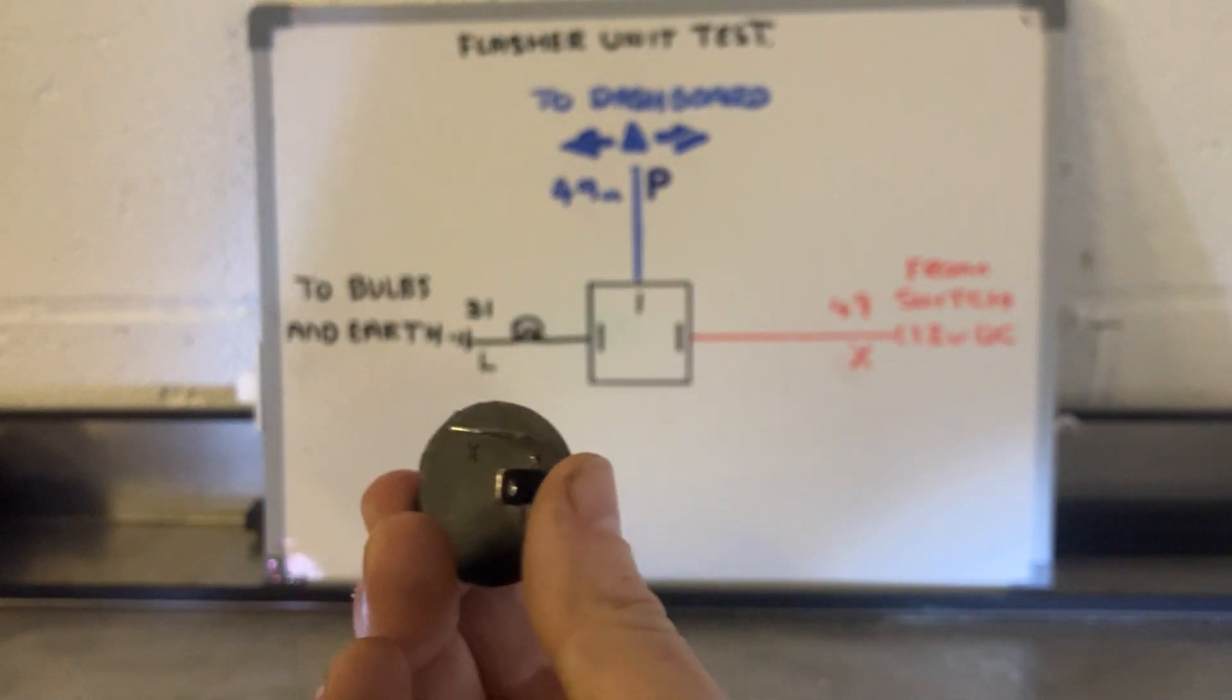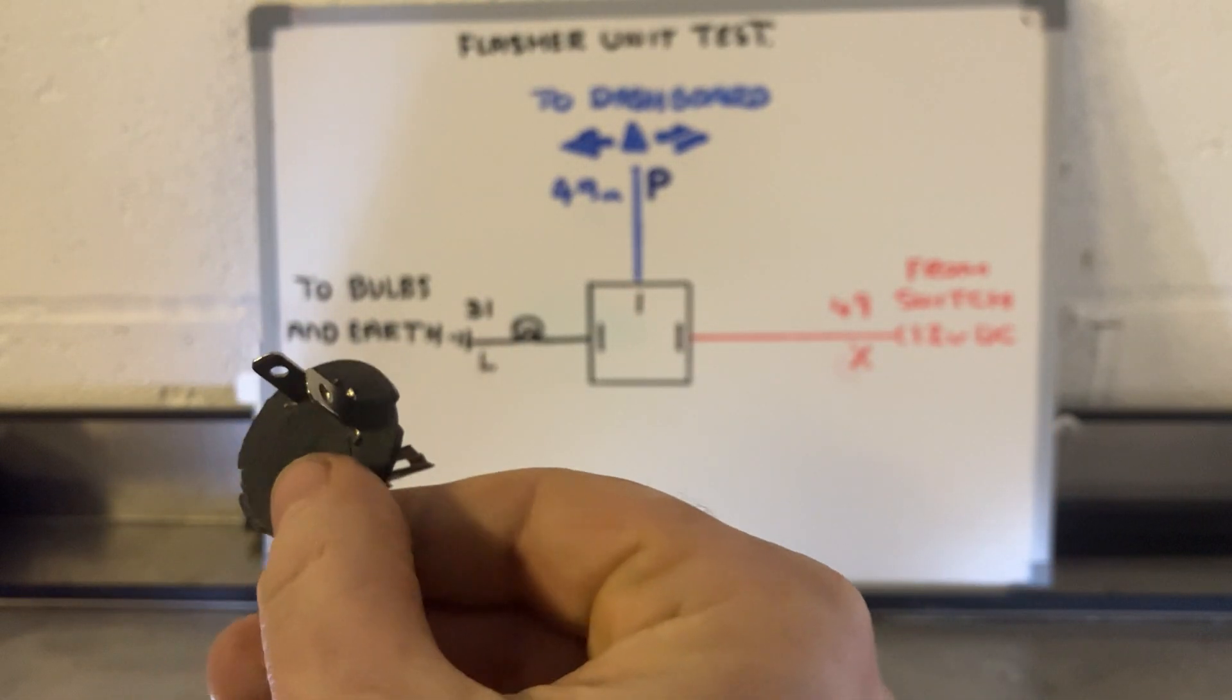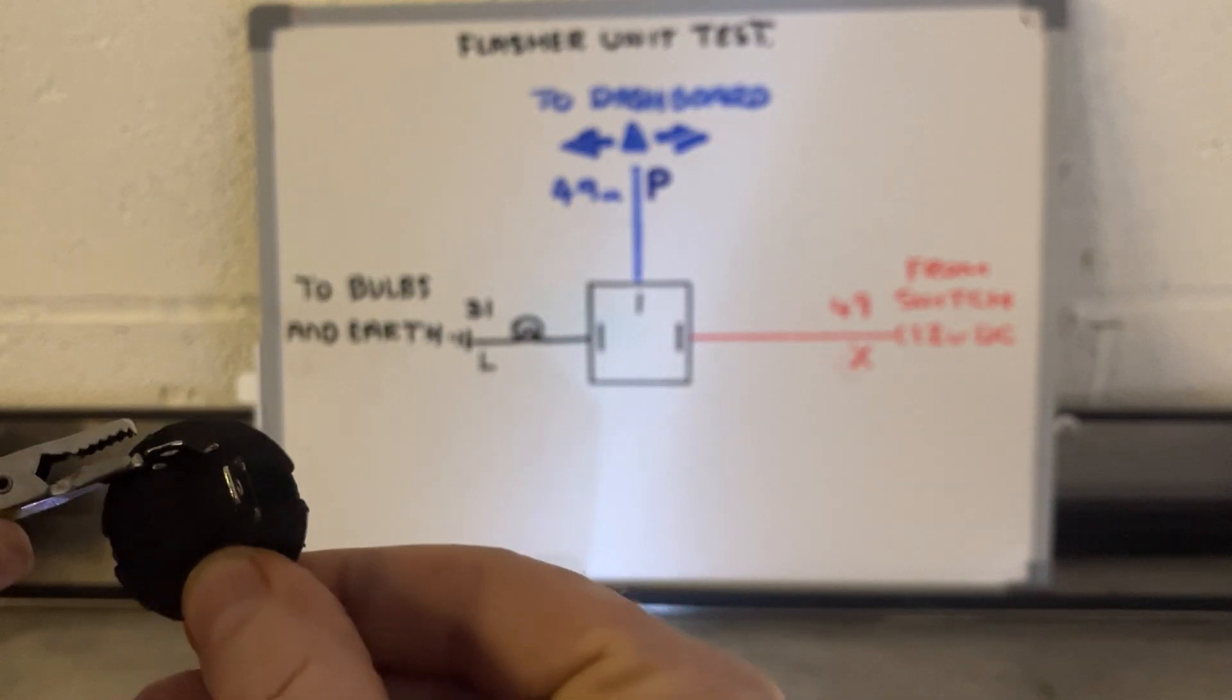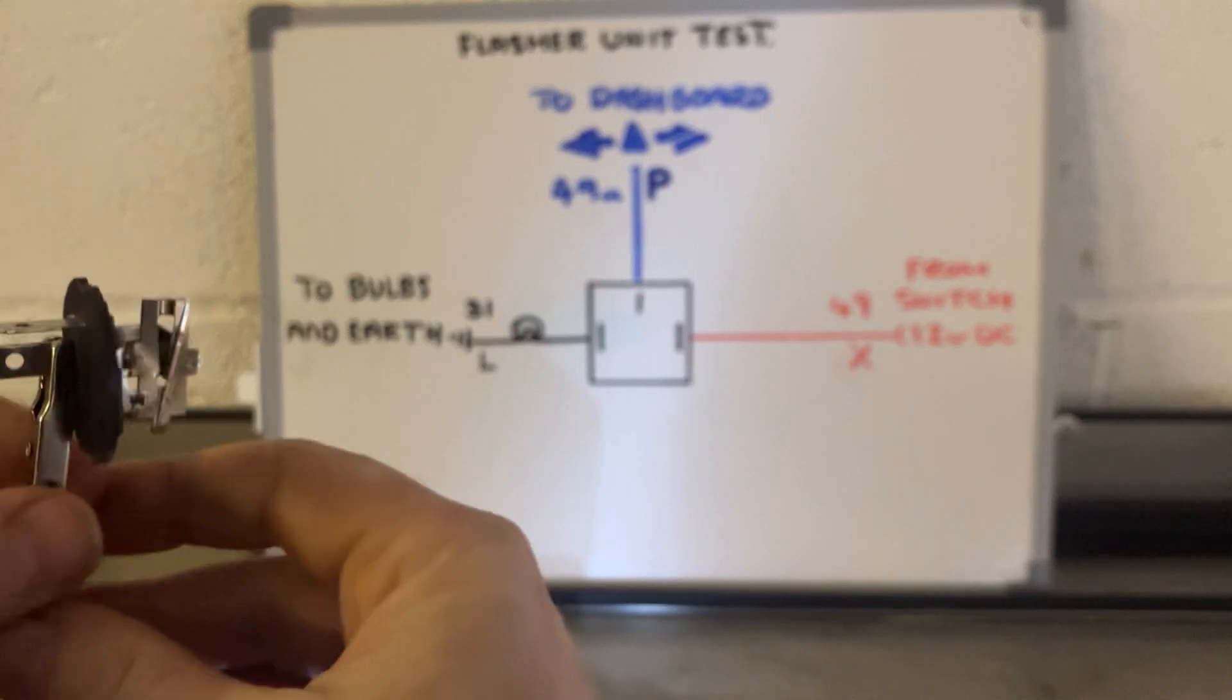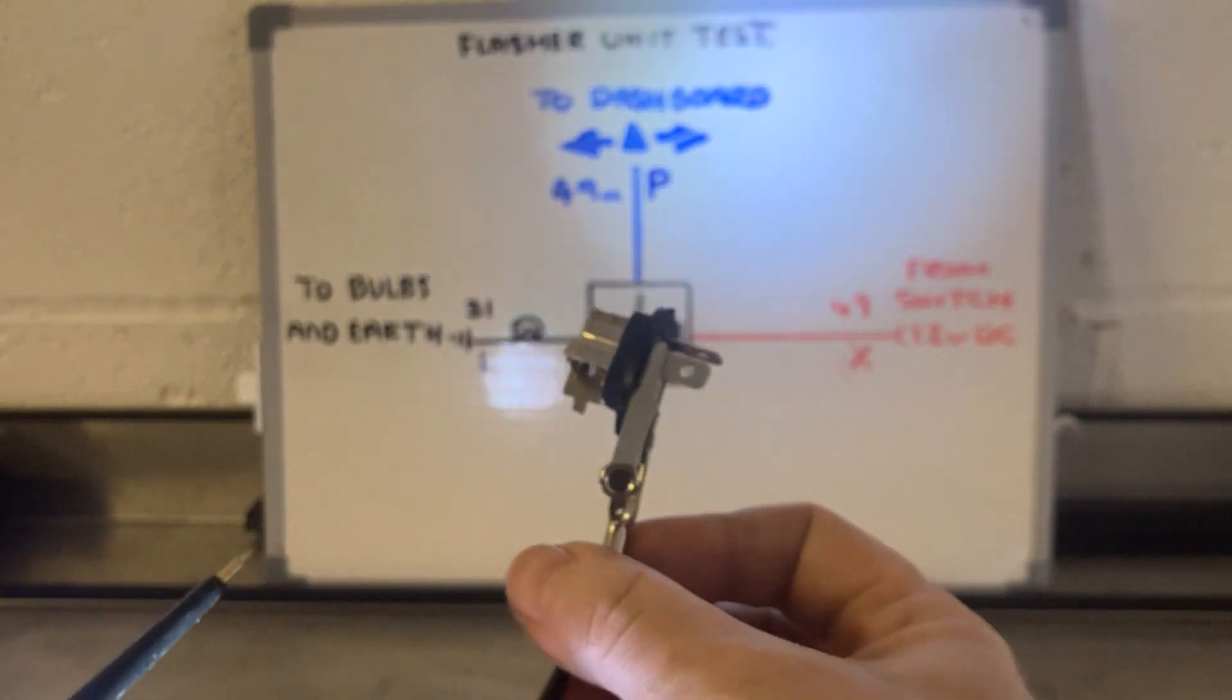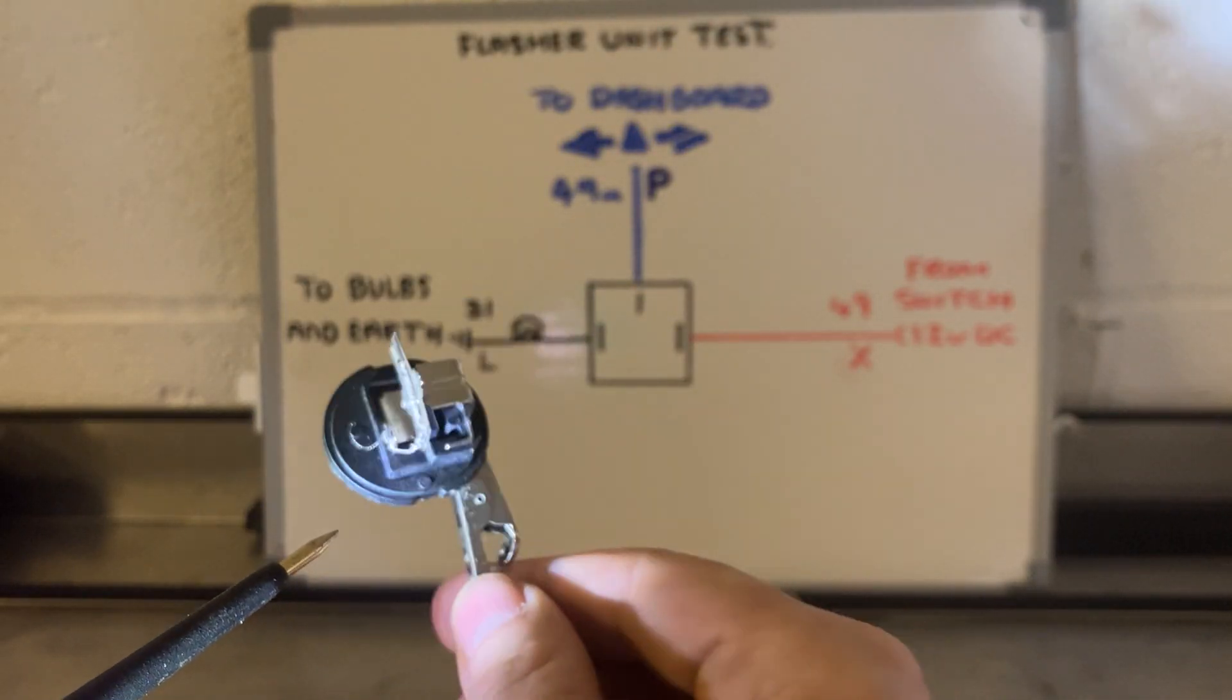All I'm going to do is look for load and earth or battery voltage. So X. So that's X. I'm going to put an earth crocodile clip on there from a car battery. And then I'm going to use a power probe to give this device 12 volts.